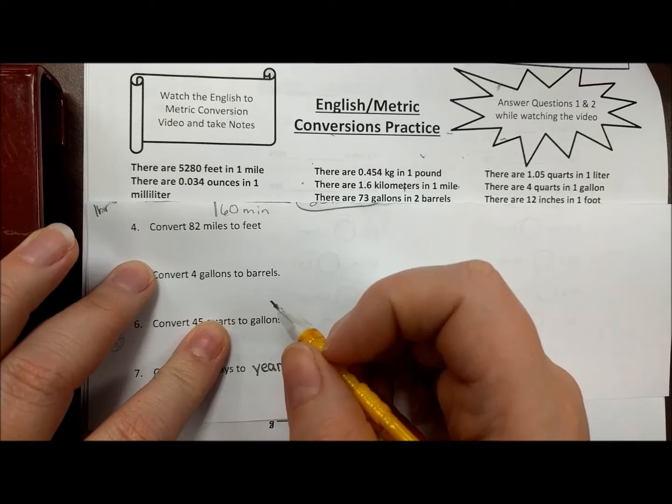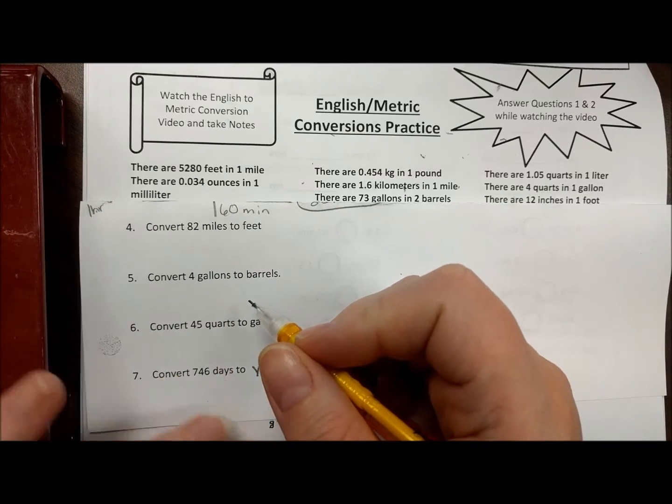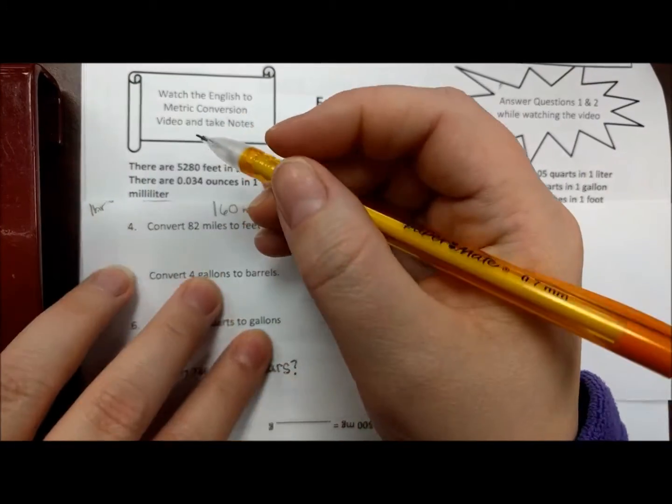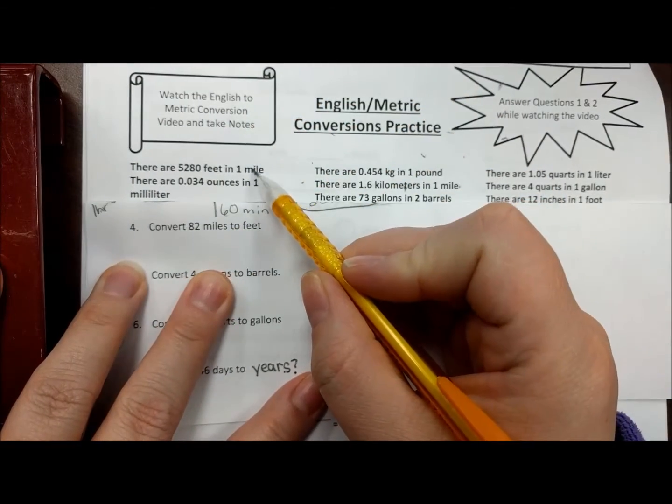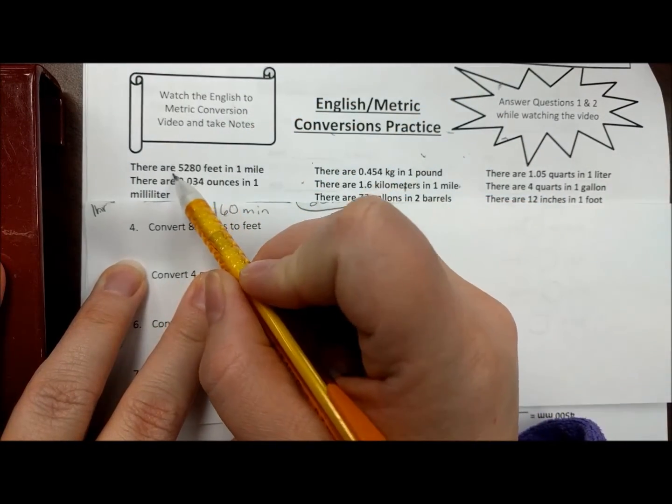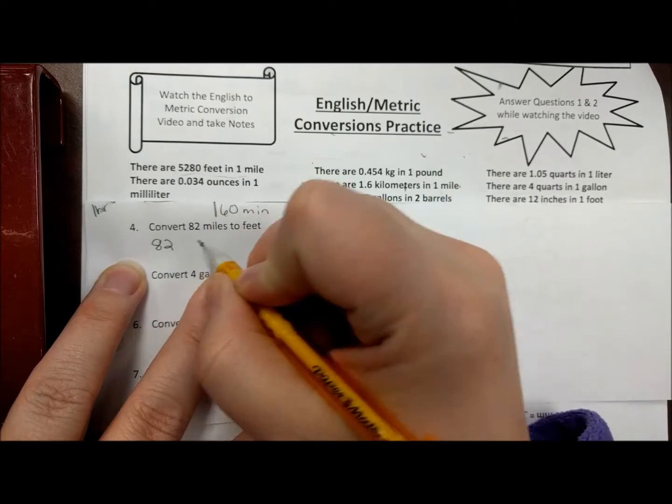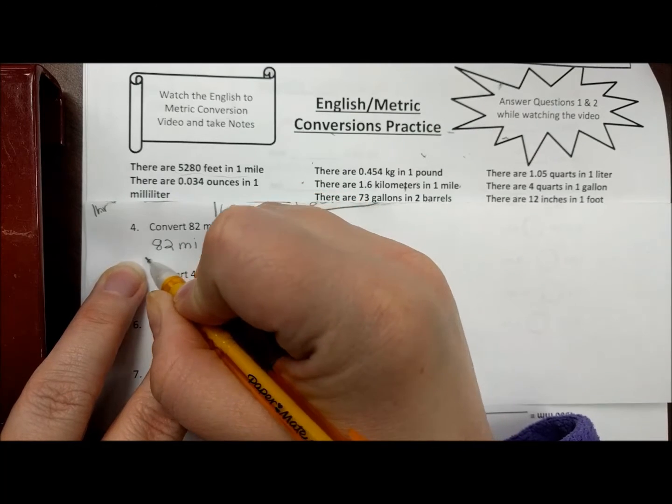Number four: convert 82 miles to feet. This is probably one that you don't know—maybe some of you remember it from when you were little. If you look up here, here is a conversion factor for feet to miles. I'm going to do what I always do: I'm going to write what they give me and abbreviate miles as mi.